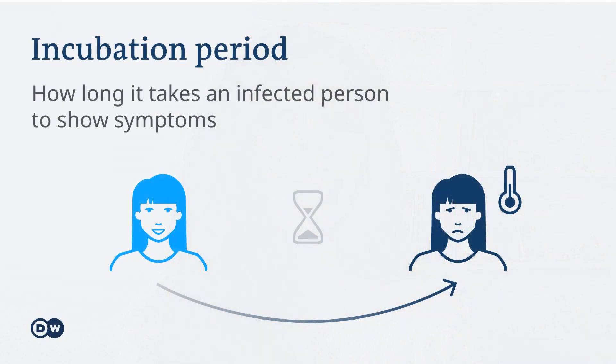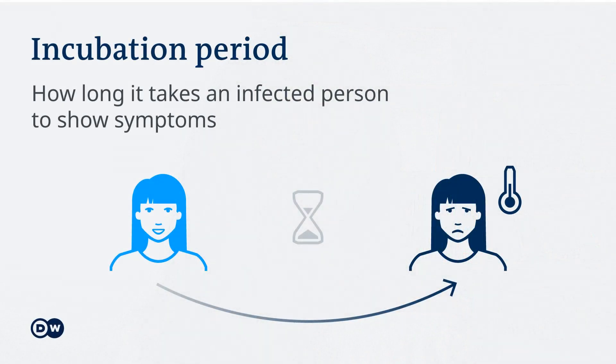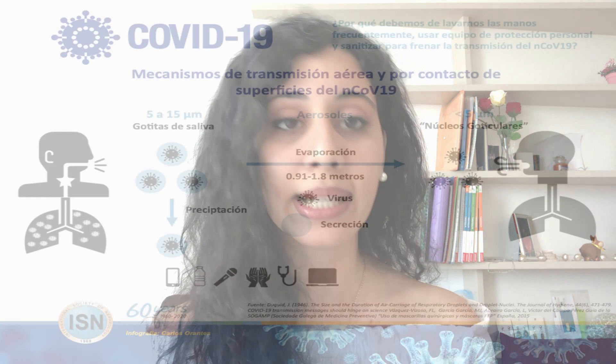Another important aspect of any infectious agent is the incubation period. It's the time from the moment of exposure to an infectious agent until signs and symptoms of the disease appear. The World Health Organization estimates that the incubation time from infection to presentation of symptoms for coronavirus is 5.2 days, with a range of 2 to 14 days.